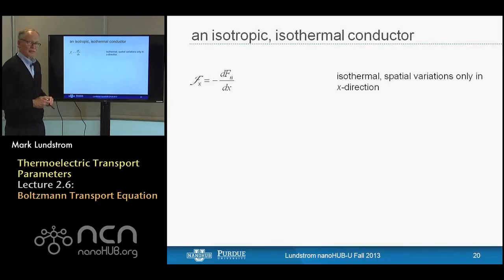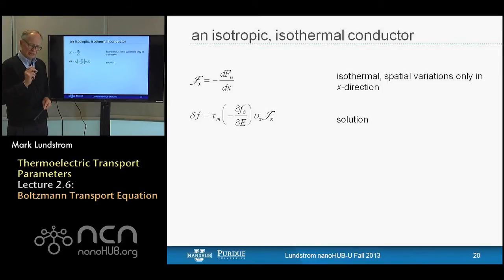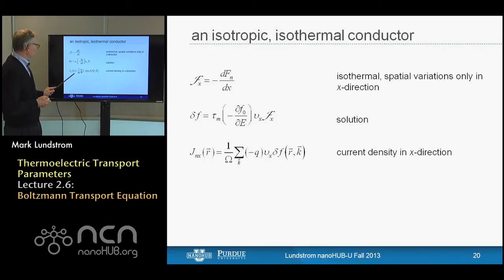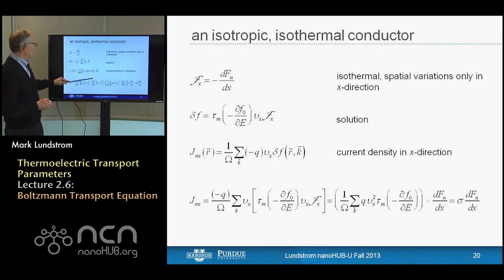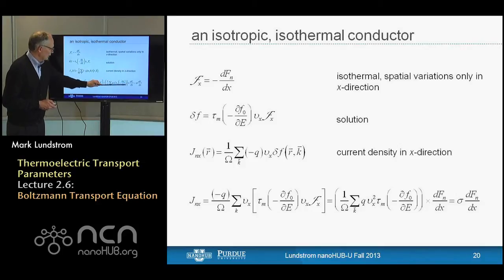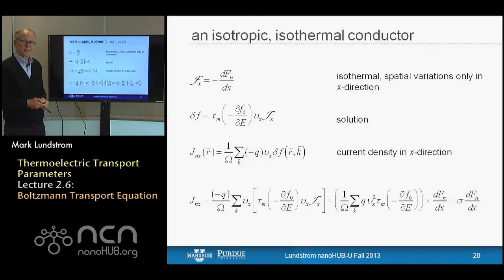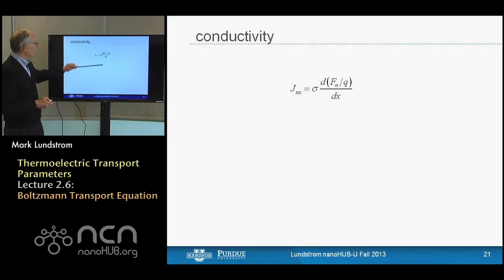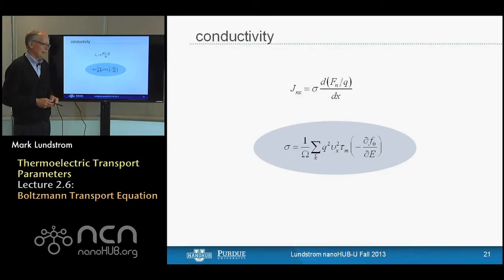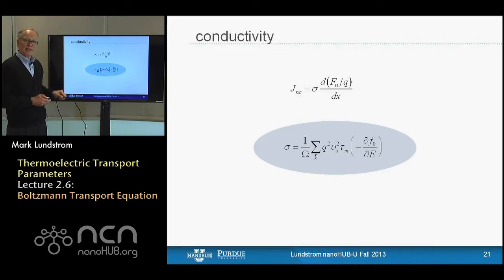For current, each electron carries charge minus q and flows at velocity v, and we only need the small deviation part. For electronic heat flow, it's a similar sum — instead of carrying charge, we're carrying heat, and the amount of heat an electron carries is energy minus the Fermi energy of the contact it came from. As an example, let's calculate the conductivity by inserting our solution to the Boltzmann equation into the current sum.